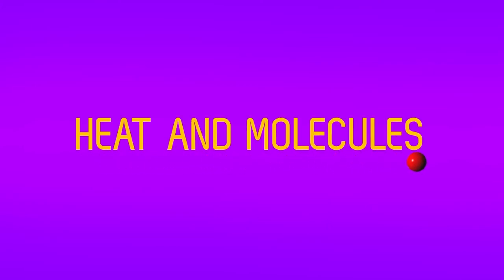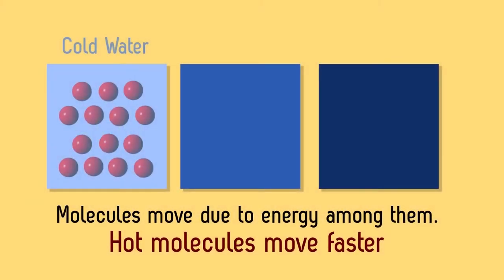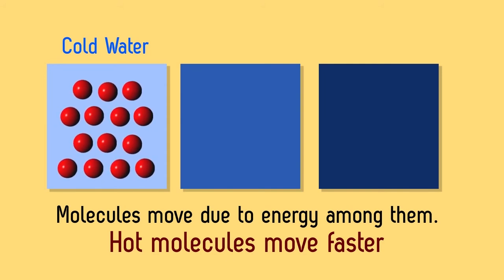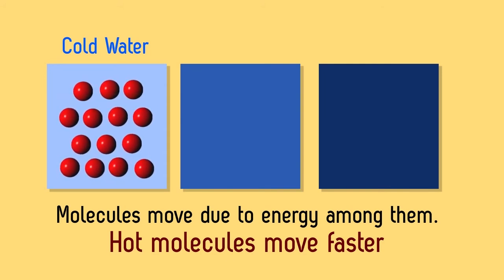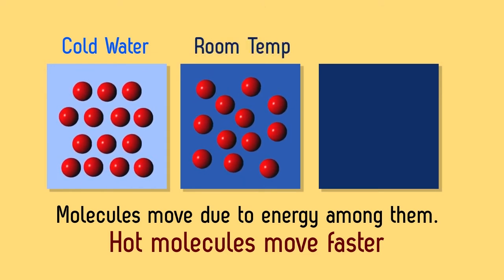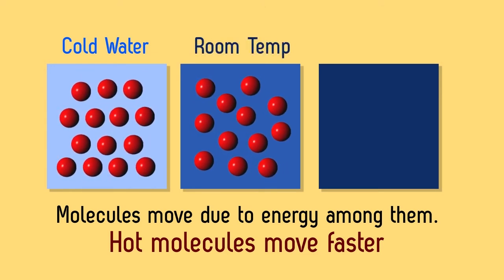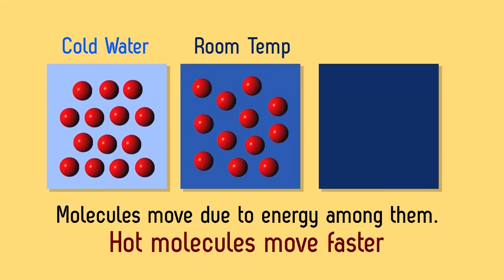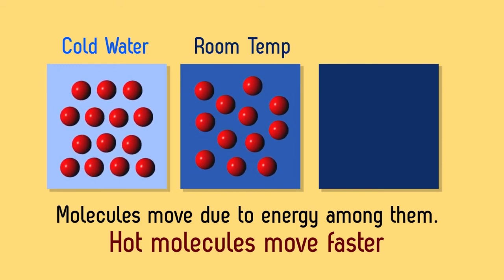Heat and molecules. Heat can change the states of objects. Things get bigger when warm air is added into them. Molecules move due to energy among them. Hot molecules move faster as compared to the molecules at room temperature.